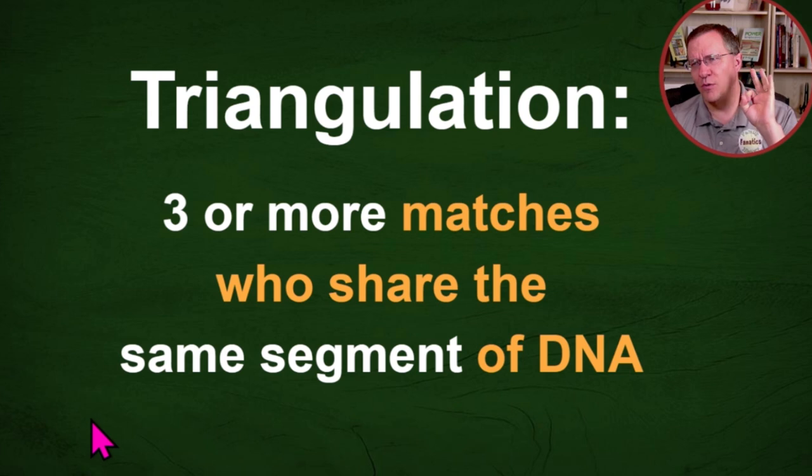Triangulation is three or more matches who share the same segment of DNA. And that is the key difference between them. With clustering you're sharing DNA between it. You match each other.